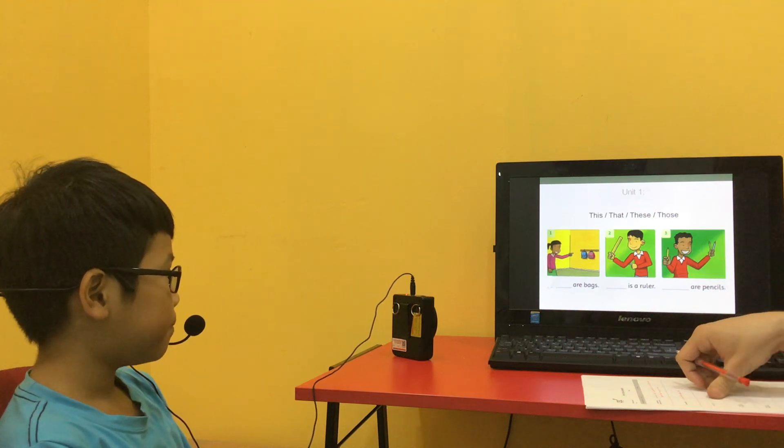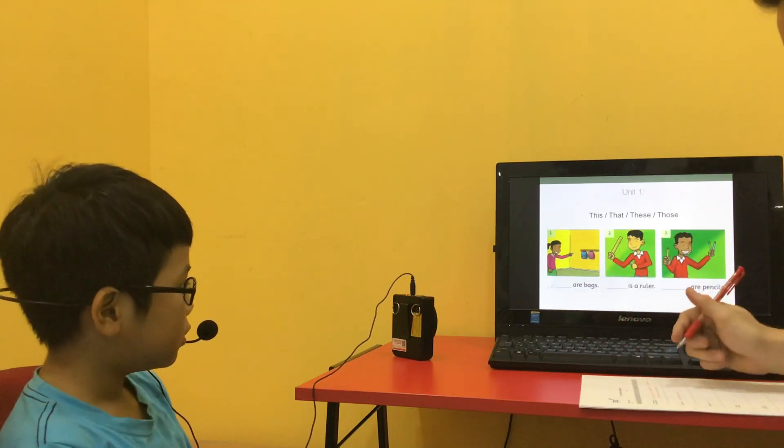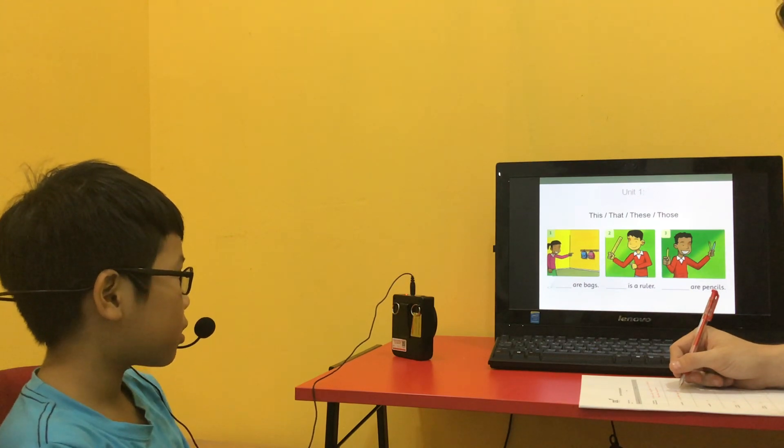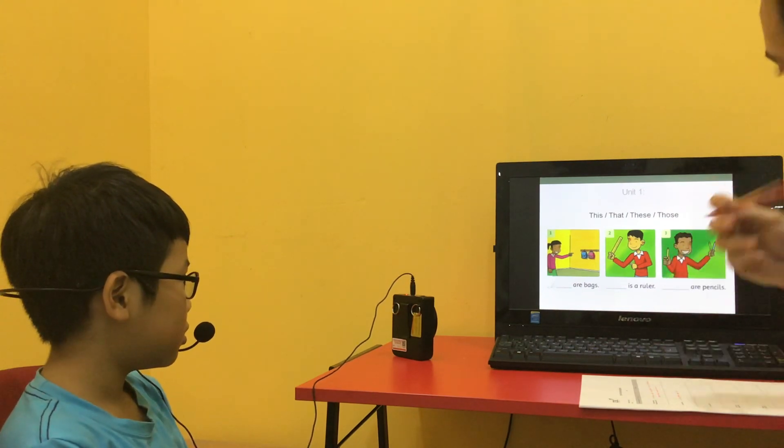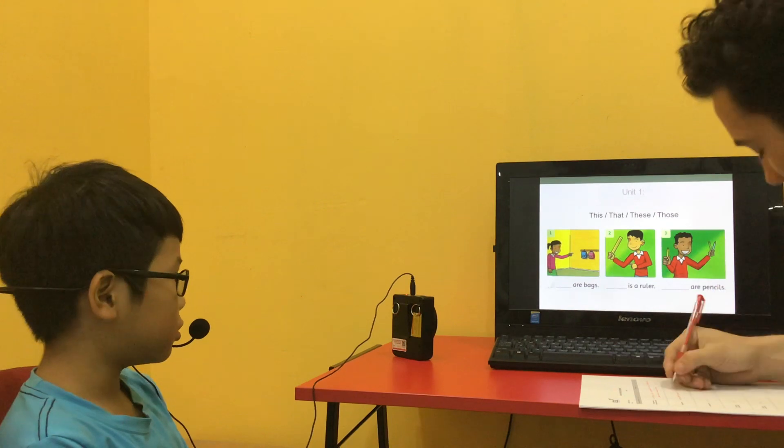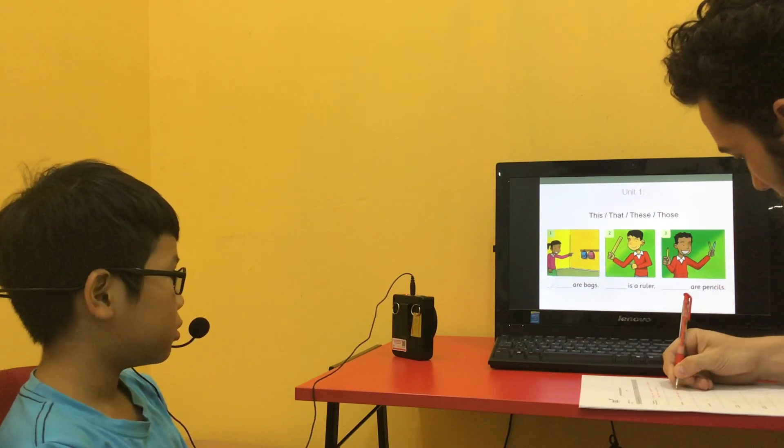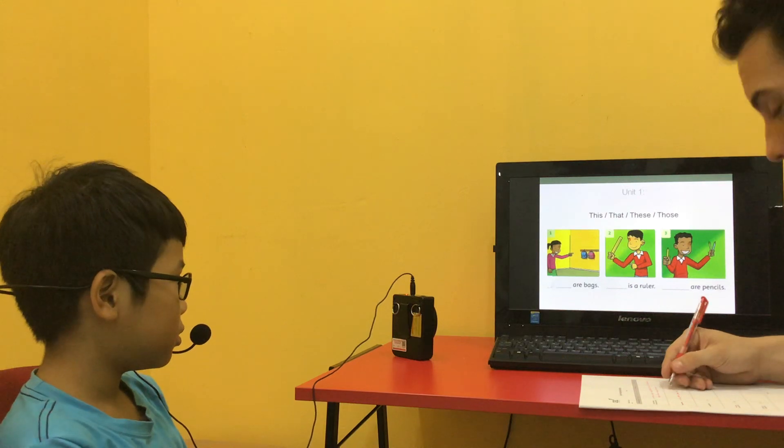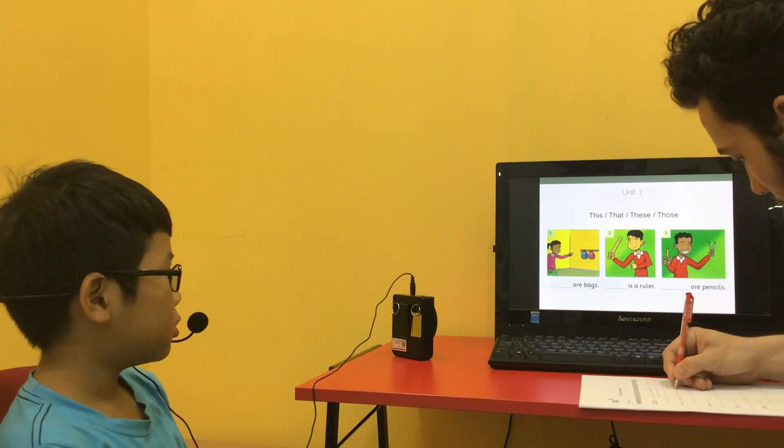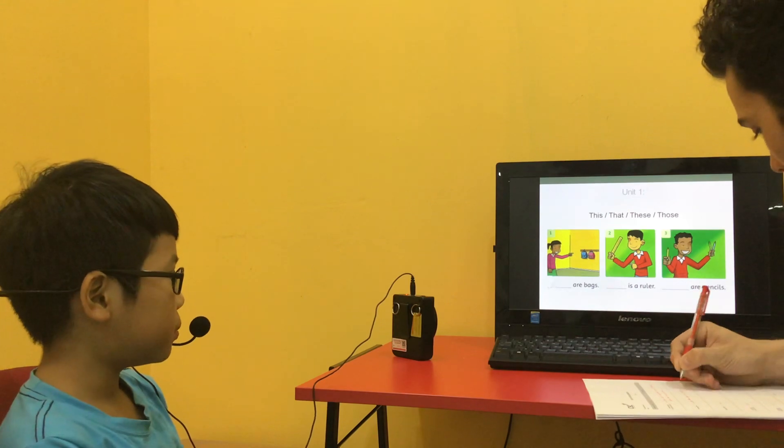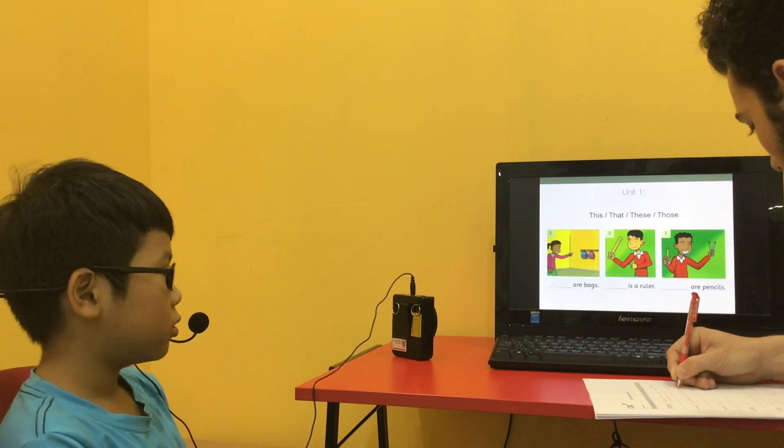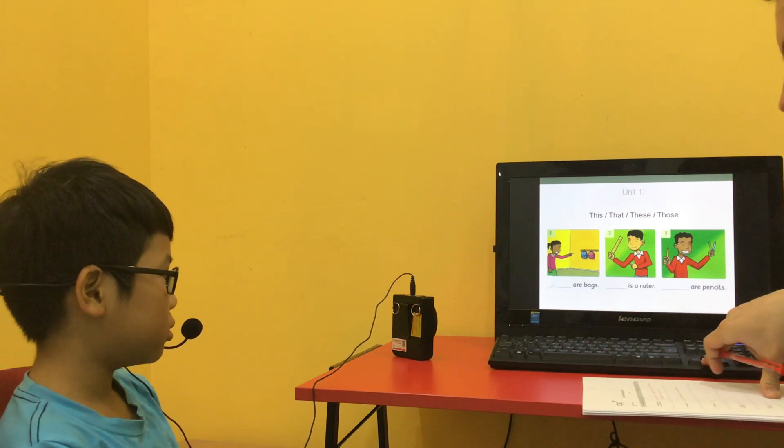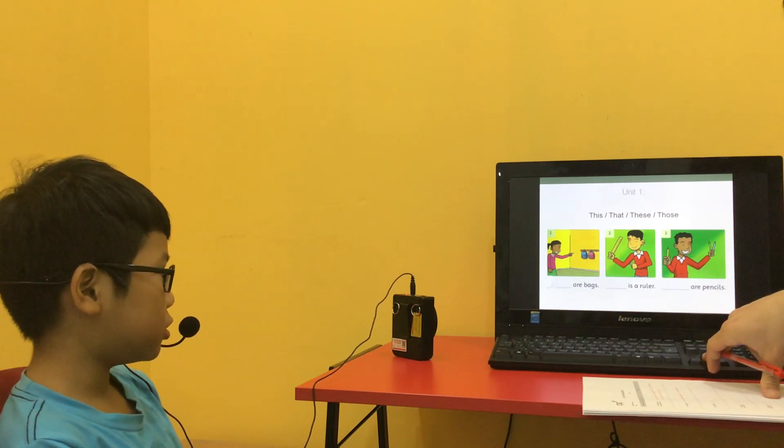This, that, these, and those. Okay, so what can we say? This, that, these, and those. Okay, so what do we say? This is all that. Very good. Number two? This is the brother. This is the brunette, number three. They are pencils. These are pencils. These are pencils.